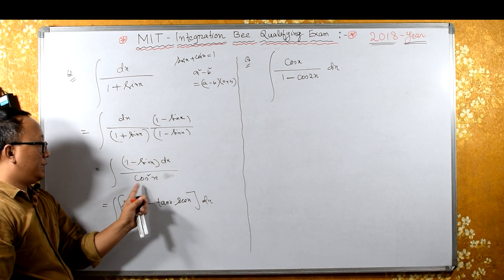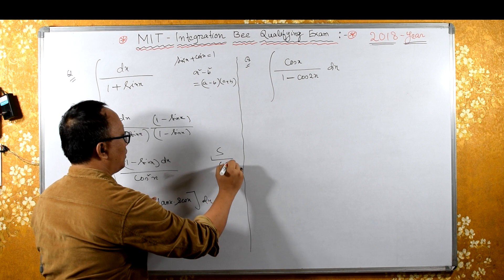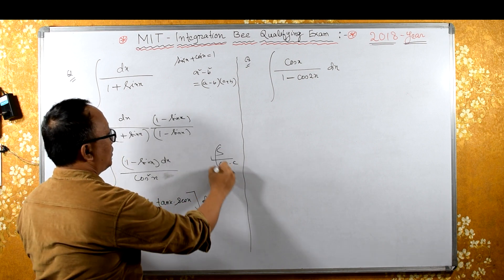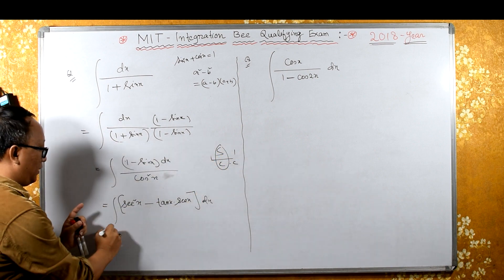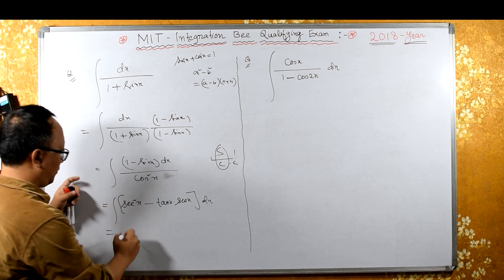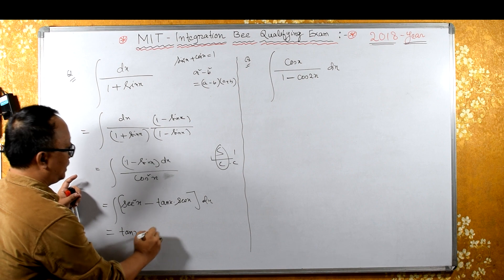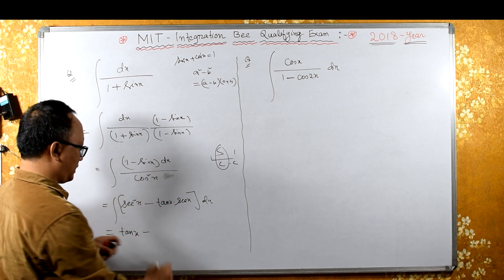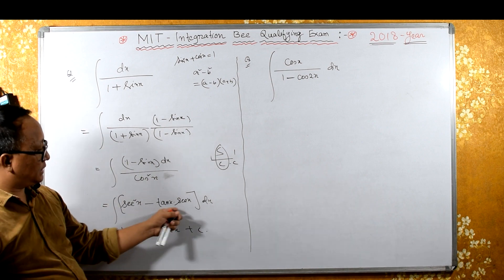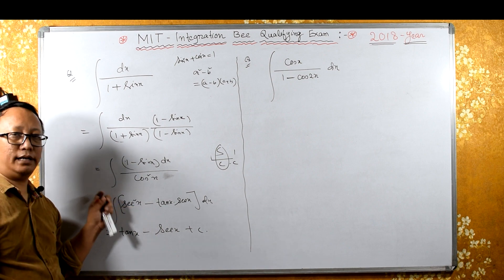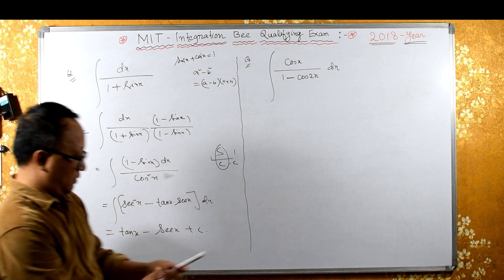The integral of sec²x is tanx, since the derivative of tanx is sec²x. The integral of sec(x)tan(x) is sec(x), since the derivative of sec(x) is sec(x)tan(x). Therefore the final answer is tanx - secx + C. This is the required answer for the first problem.